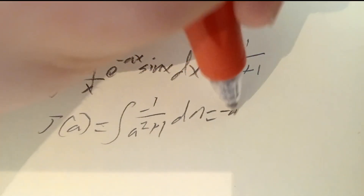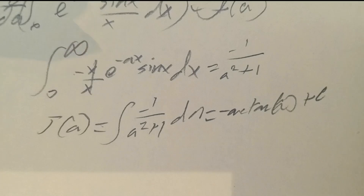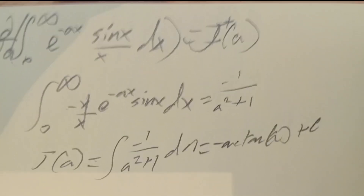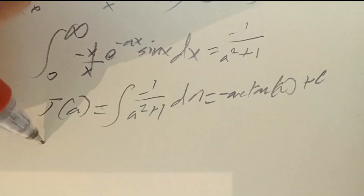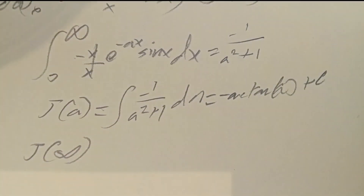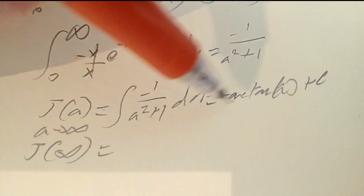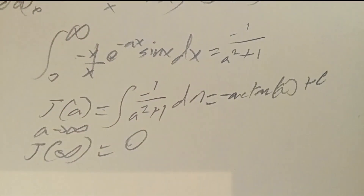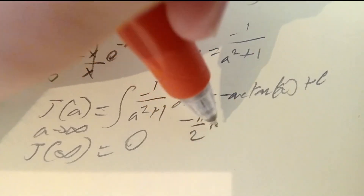That integral equals negative arctan(a) plus C. To find C, we let a approach infinity: the exponential e to the negative ax collapses to 0, so J(infinity) = 0. As a approaches infinity, arctan approaches pi/2, so negative pi/2 plus C = 0, giving C = pi/2.